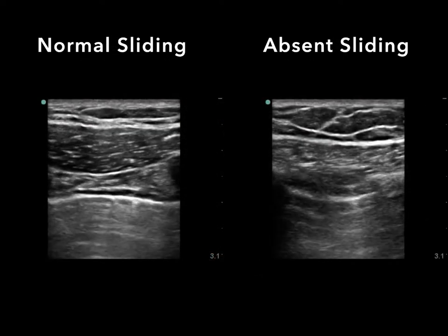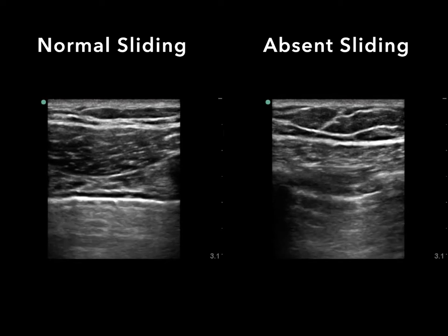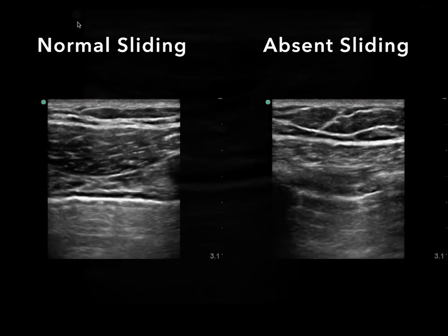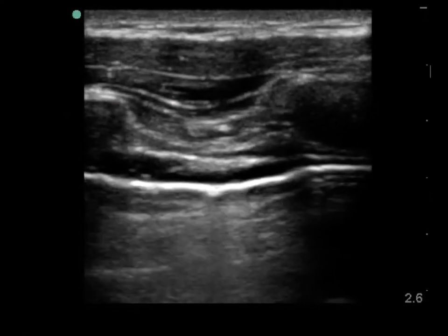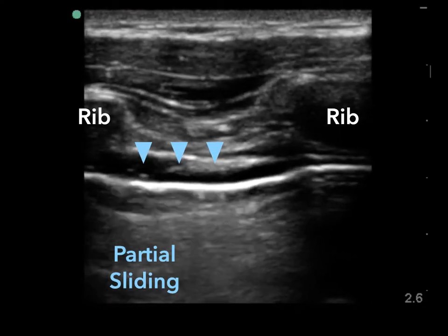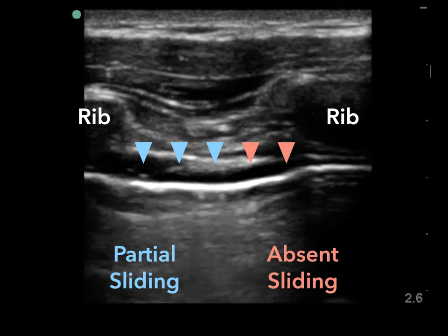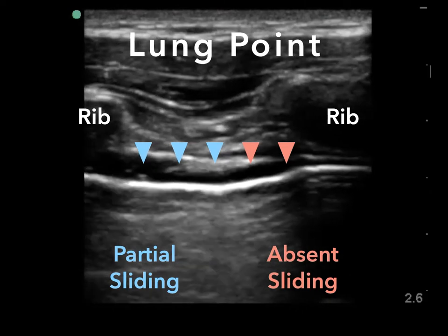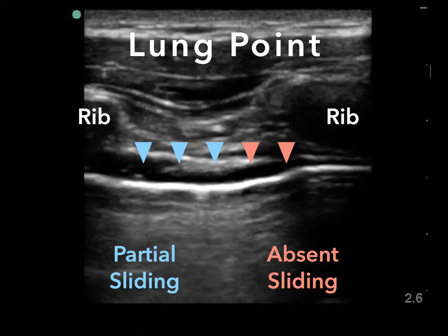It's easy to see the difference when you compare normal sliding and absent sliding side by side. You may occasionally see the presence of partial sliding in the pleural line adjacent to a portion that is not sliding. This is called the lung point and is the most specific ultrasound finding of a pneumothorax — essentially the spot where the visceral and parietal pleura separate from each other, where the pneumothorax starts.